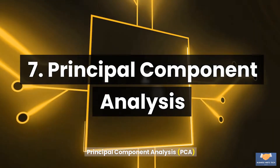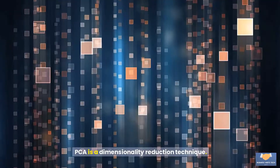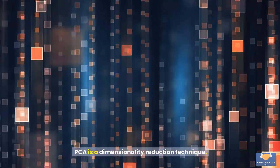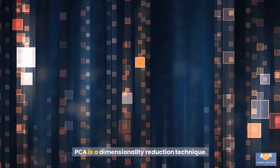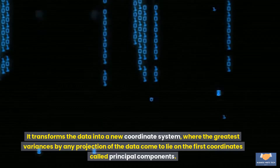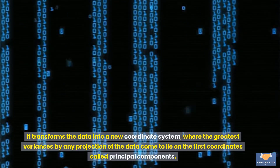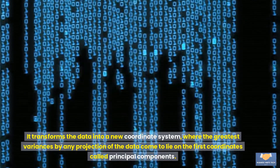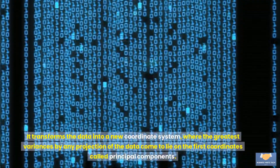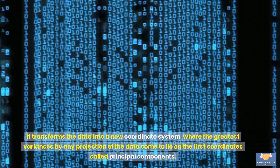Principal Component Analysis, or PCA, is a dimensionality reduction technique. It transforms the data into a new coordinate system, where the greatest variances by any projection of the data come to lie on the first coordinates, called principal components.